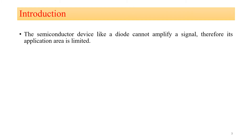As we know, a semiconductor device like a diode cannot amplify a signal, so its application area is limited. In unit number 1 we covered various types of diodes: the PN junction diode, Zener diode, light emitting diode, and photodiode. The PN junction diode is generally used for rectification — converting AC signal into DC signal — and the Zener diode is used as a voltage regulator. So the application area of all diodes is limited.